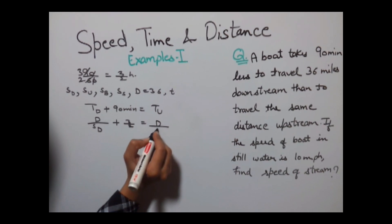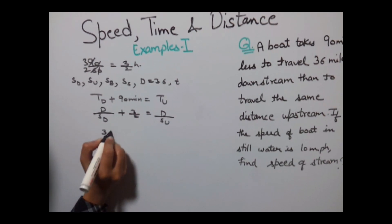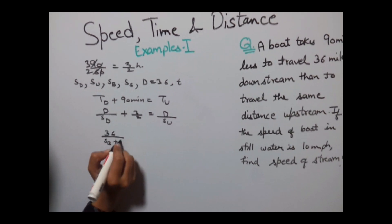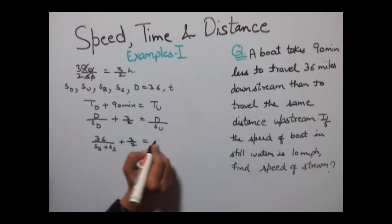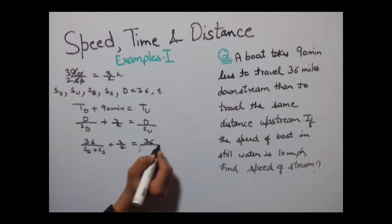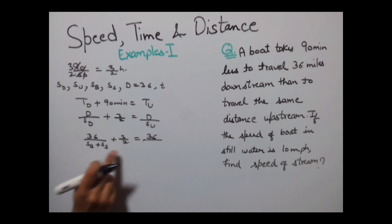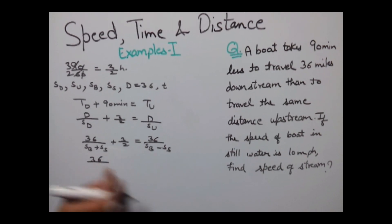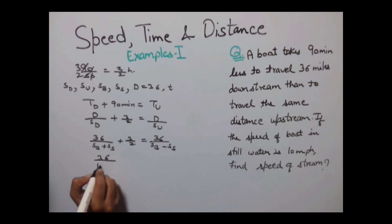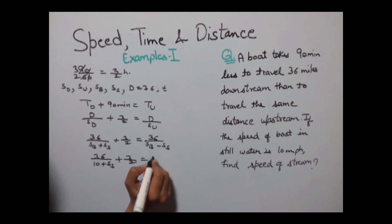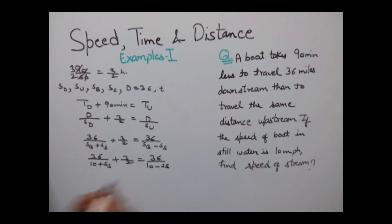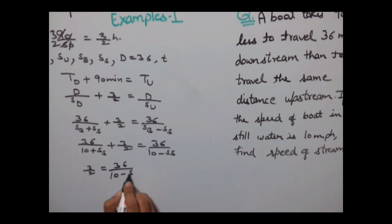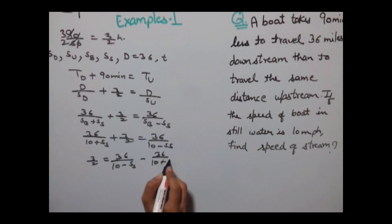This equals distance upon speed of upstream. Distance is 36 upon speed of downstream, which is speed of boat plus speed of stream. So: 36 upon (10 + SS) plus 3/2 equals 36 upon (10 minus SS). Rearranging: 3/2 equals 36 upon (10 minus SS) minus 36 upon (10 plus SS).